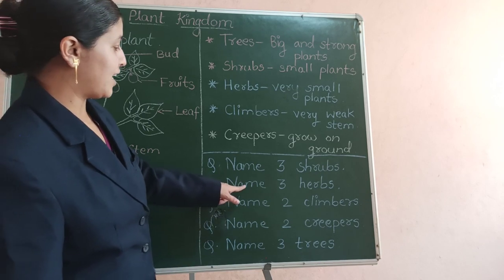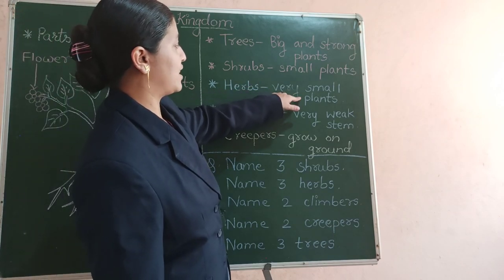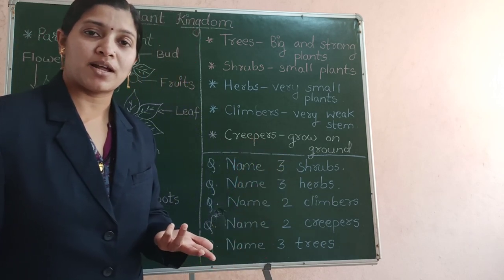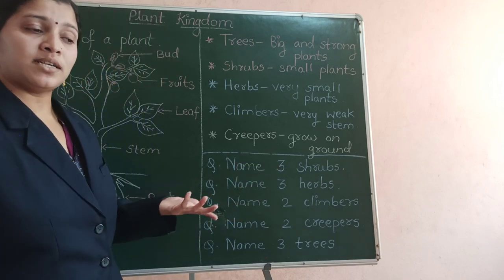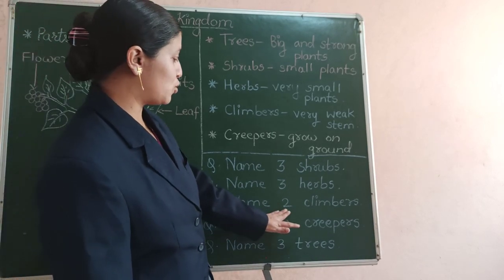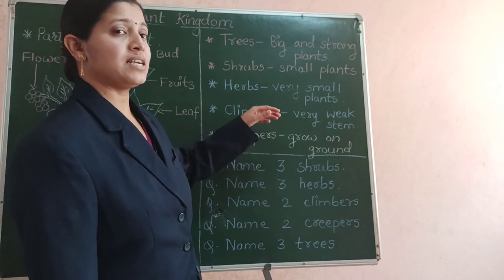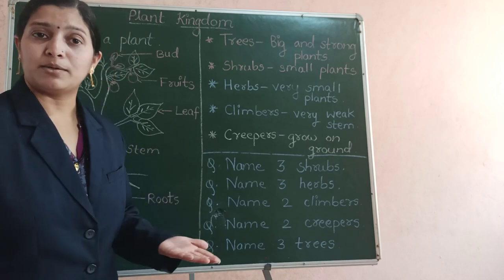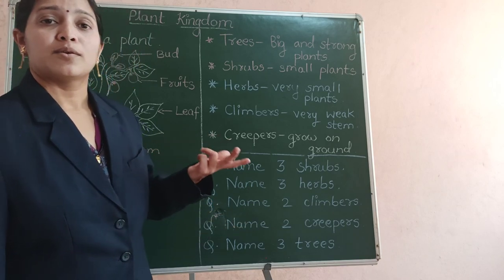The next question is name 3 herbs. Herbs are plants smaller than shrubs. Examples are wheat plant, rice plant, ginger plant, radish, carrot and mint. You can write any 3 names. Then, name 2 climbers. Climbers grow taking the support of other things. Examples are money plant, grapevine, cucumber plant and beans plant.